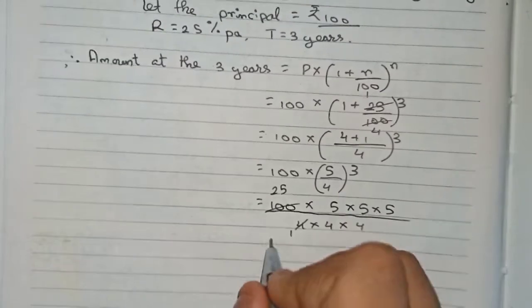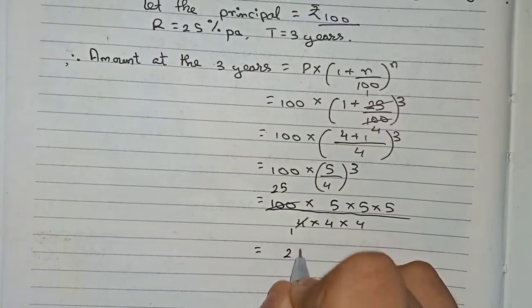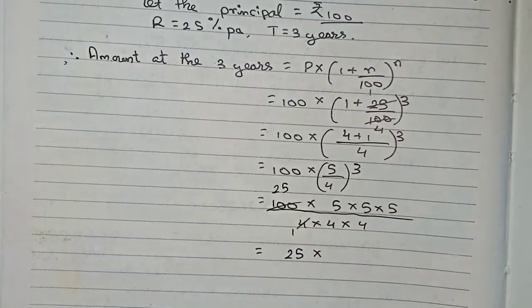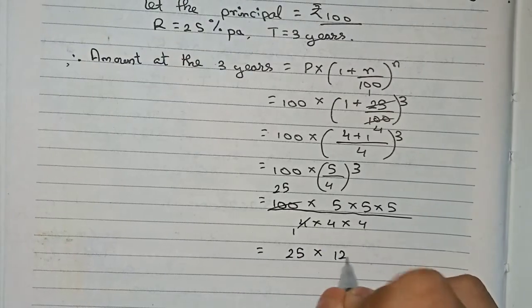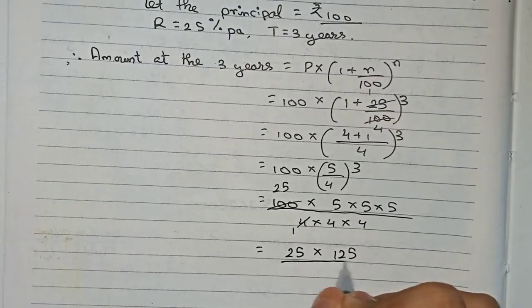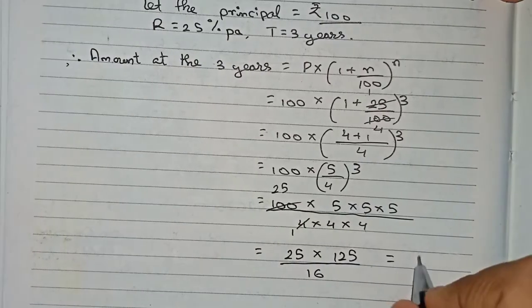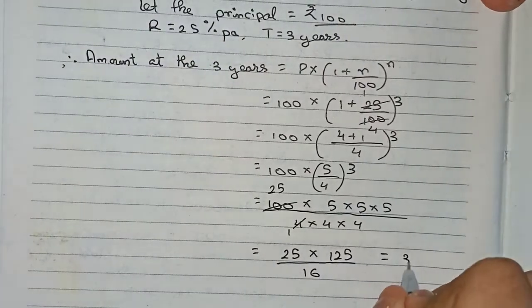Multiplying the numbers: 25 × 5 × 5 × 5 equals 25 × 125. 4 × 4 = 16. So we get (25 × 125)/16 = 3125/16.